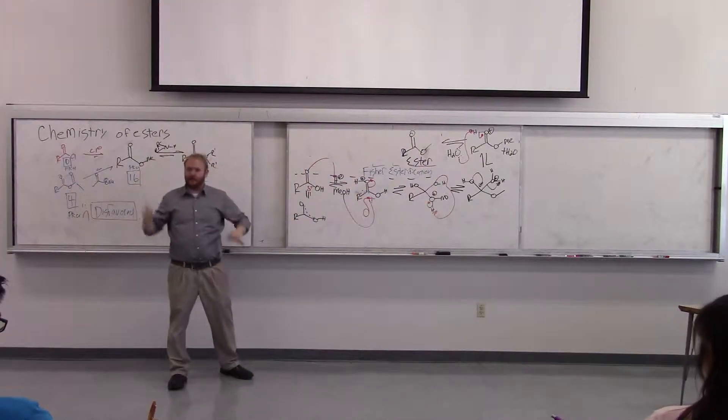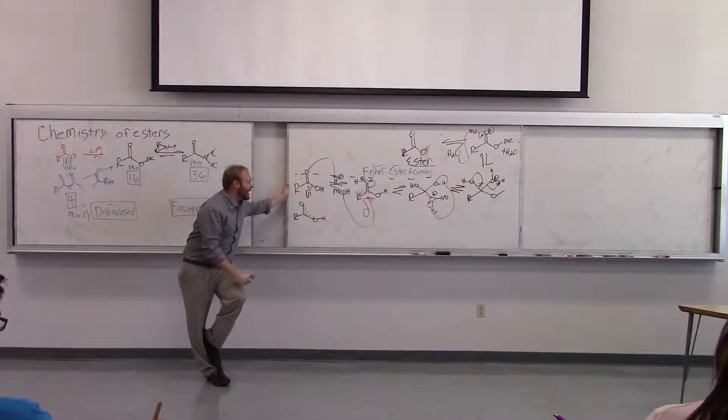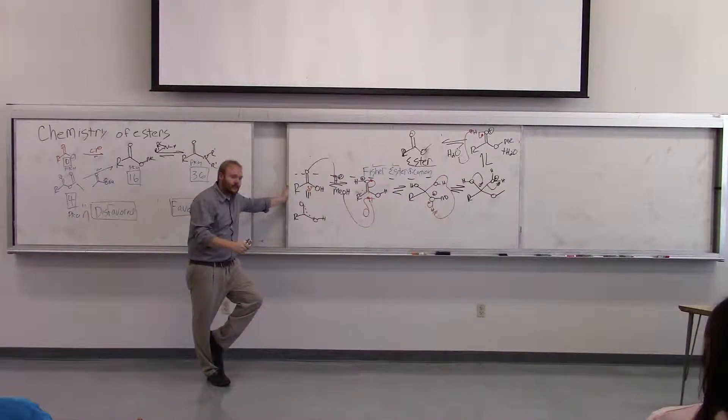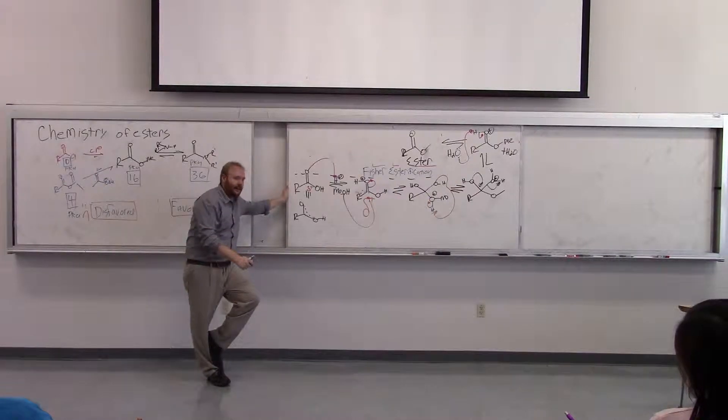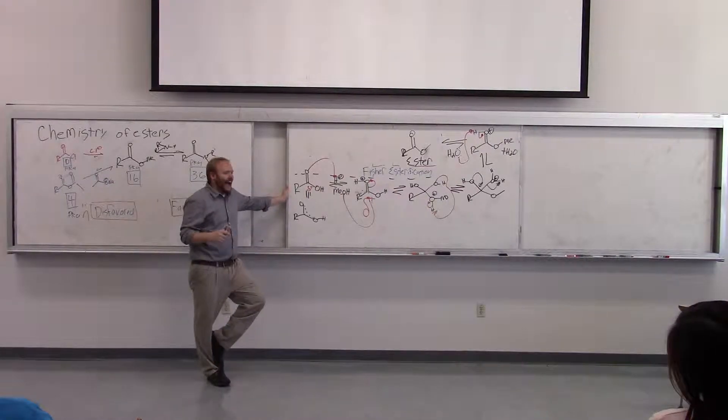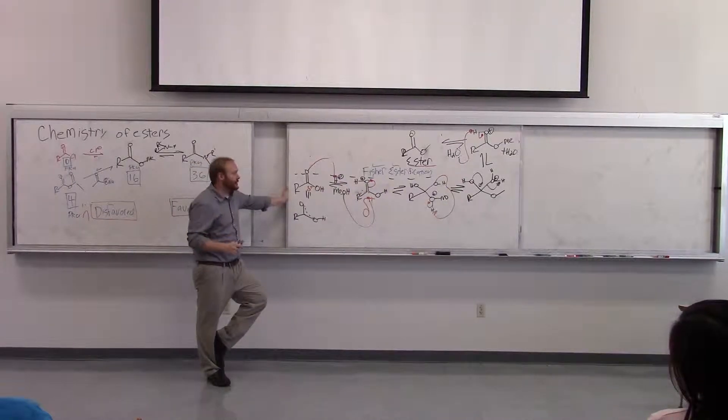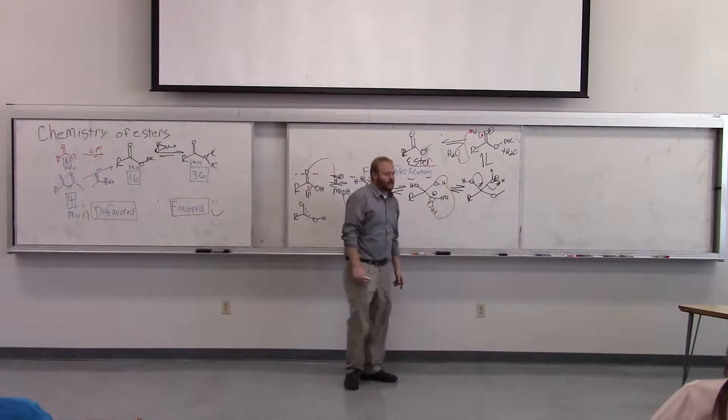Sorry about that. I got myself confused. So carboxylic acids in acidic methanol, you will get the methyl ester out. That is one of the best ways to make methyl esters or any ester. Use the alcohol you want to add in as the solvent and use Le Chatelier's and H plus in methanol to drive it from the carboxylic acid to the methyl ester.